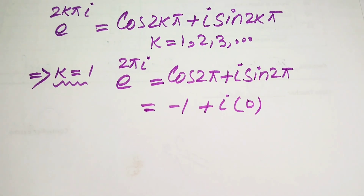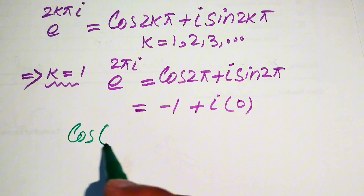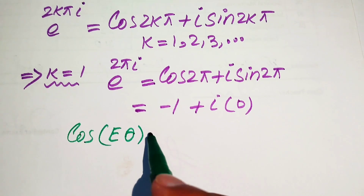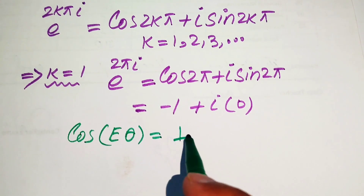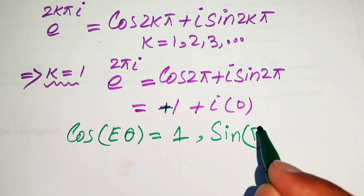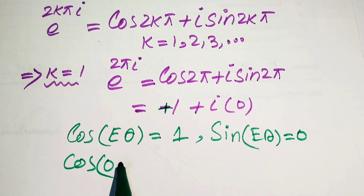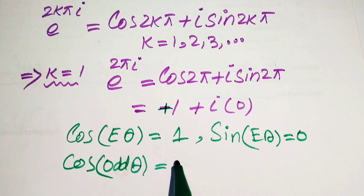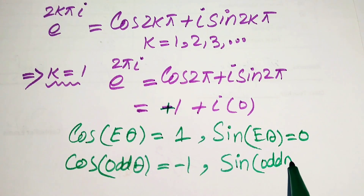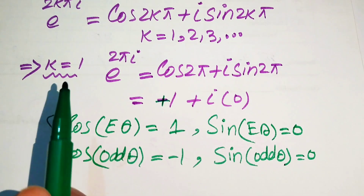Remember: for an even multiple of theta, cos gives plus 1, and for an even multiple of theta, sine gives 0. For an odd multiple of theta, cos gives minus 1, and for an odd multiple of theta, sine gives 0. We use this fact to directly evaluate these values.